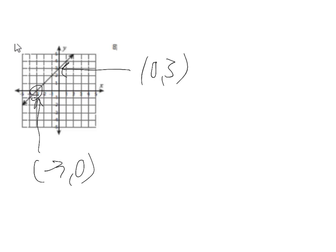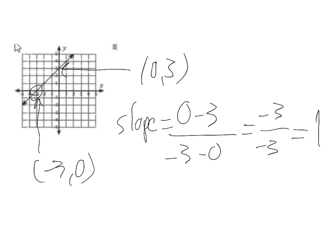And to find the slope I subtracted the y's. So 0 minus 3 over negative 3 minus 0. I get negative 3 over negative 3 which is just 1.